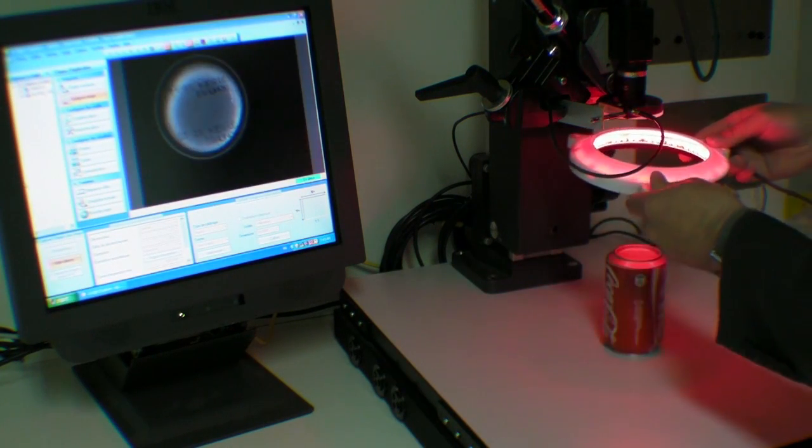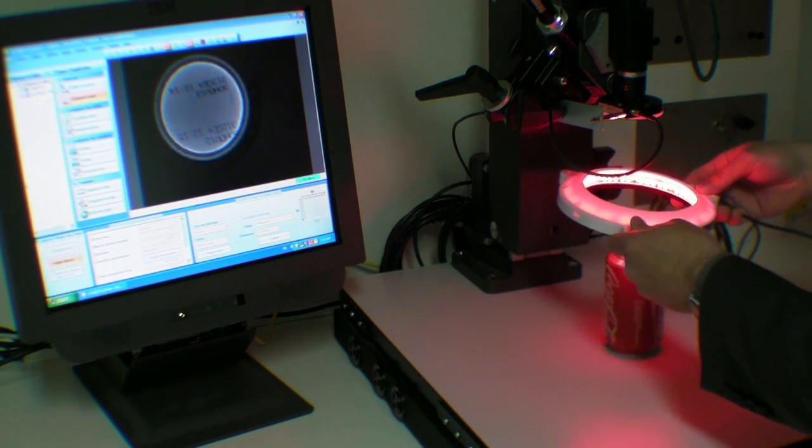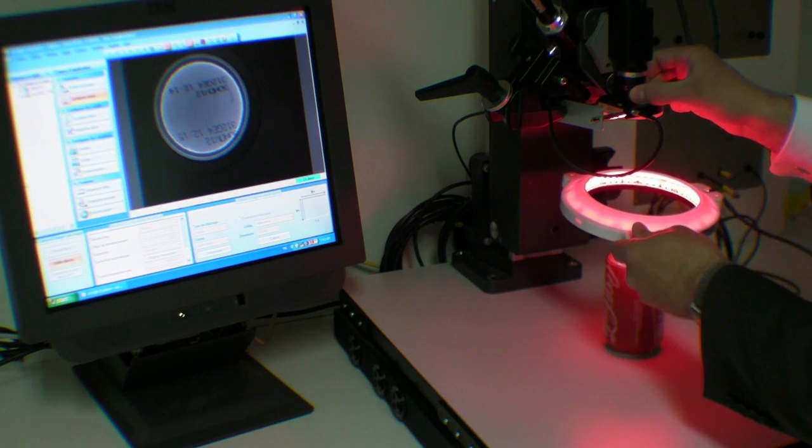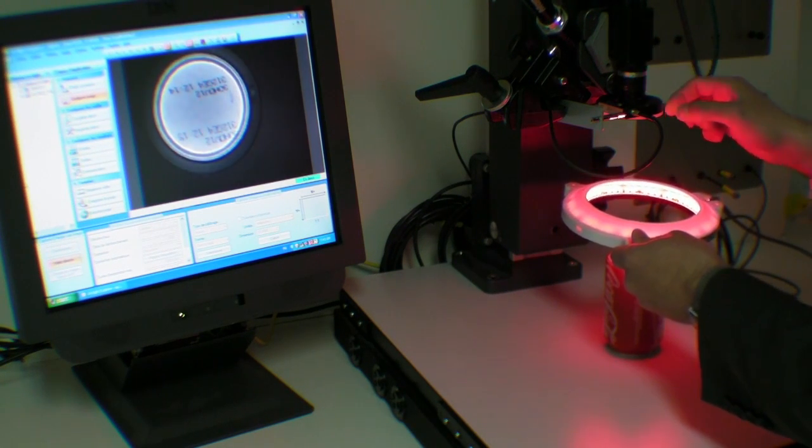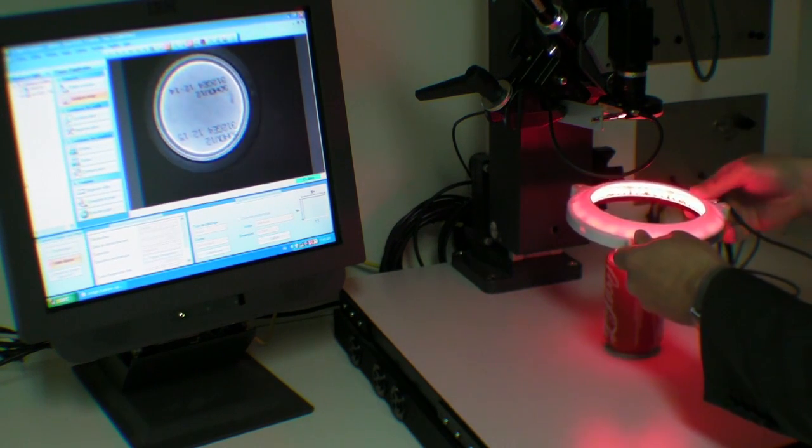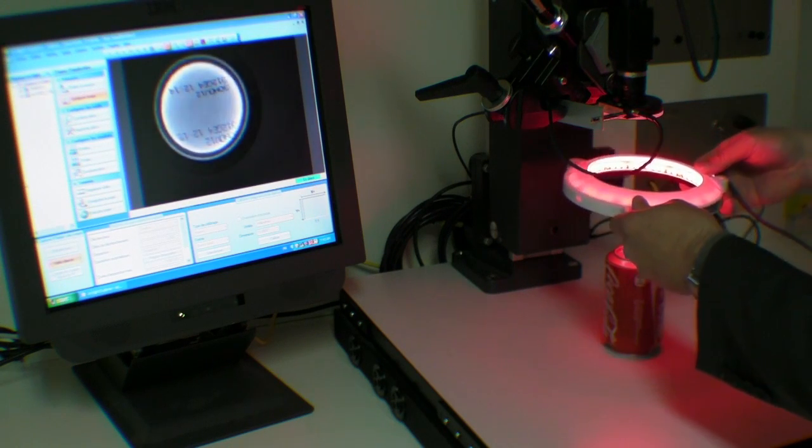By moving the low angle up and down like this, you get different results on your computer screen. As you can see, the markings appear clearly now and this image will be suitable for the computer software.